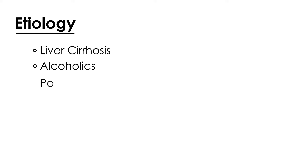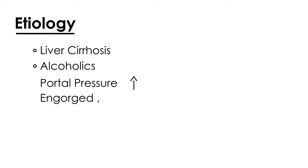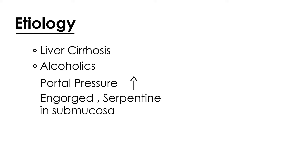The portal pressure rises, and eventually these veins in the esophagus start to become engorged and serpentine-like. They exist in the submucosa of the esophagus, and because they're in the distal esophagus, they are given the special name esophageal varices.